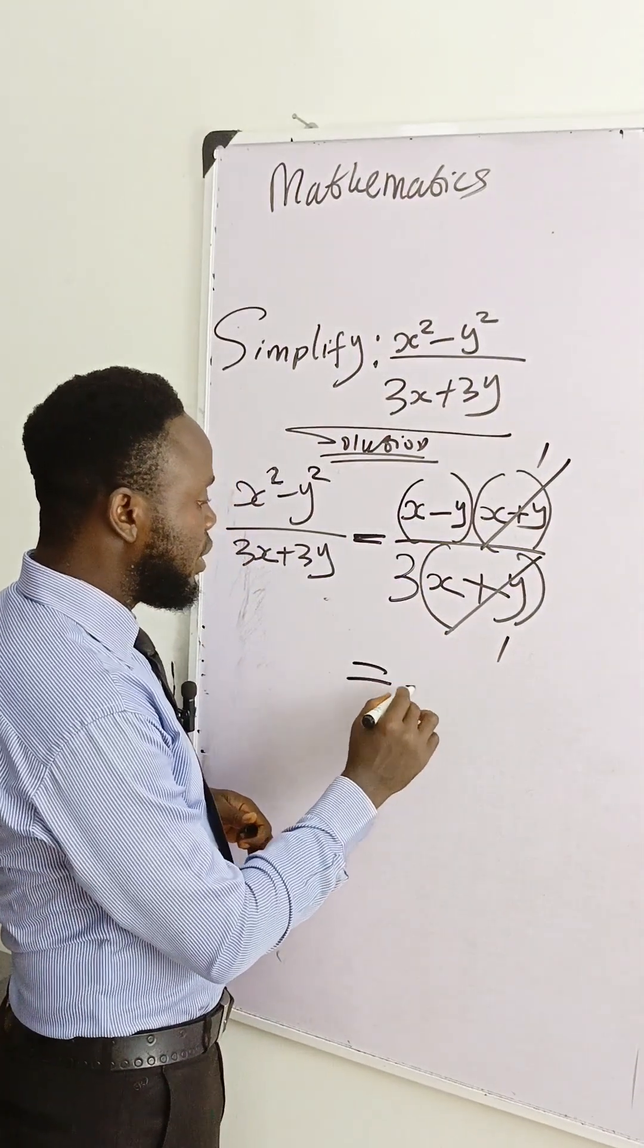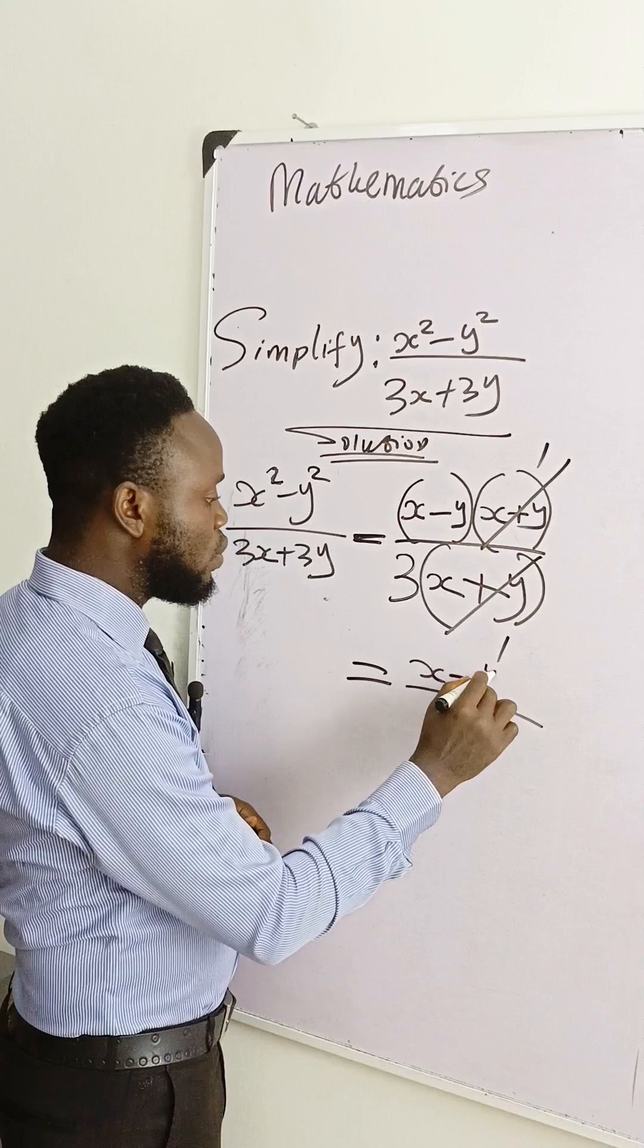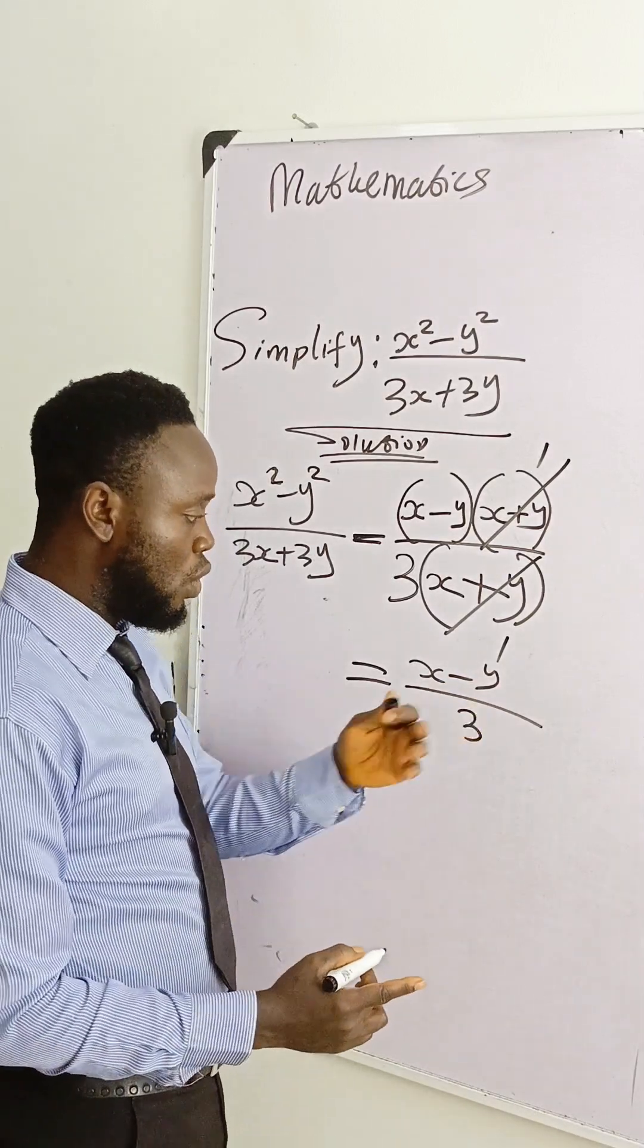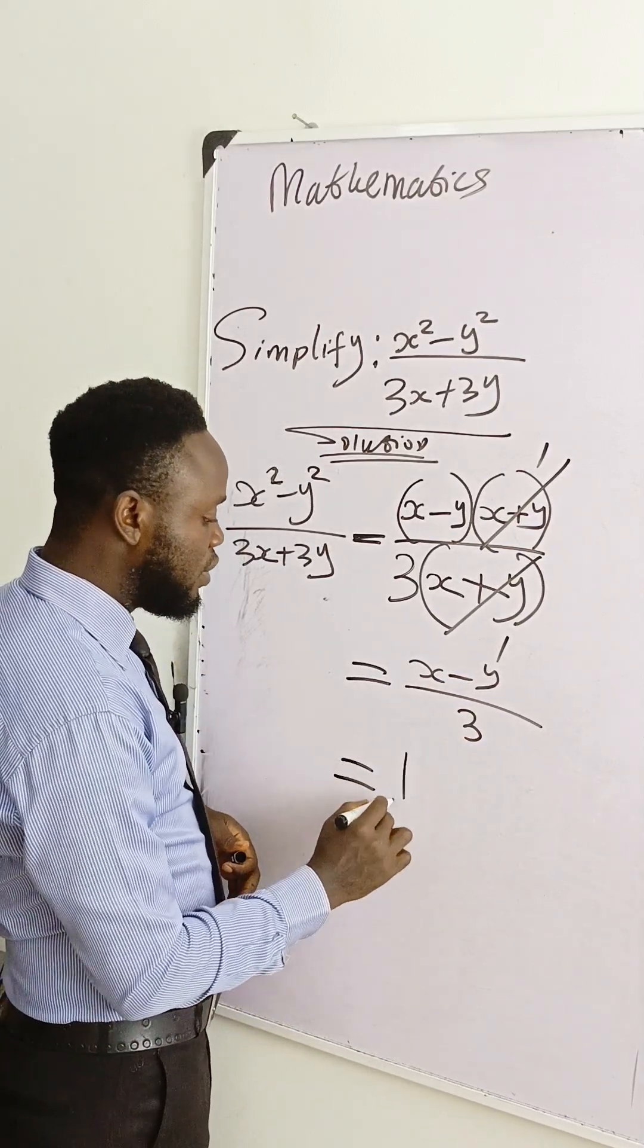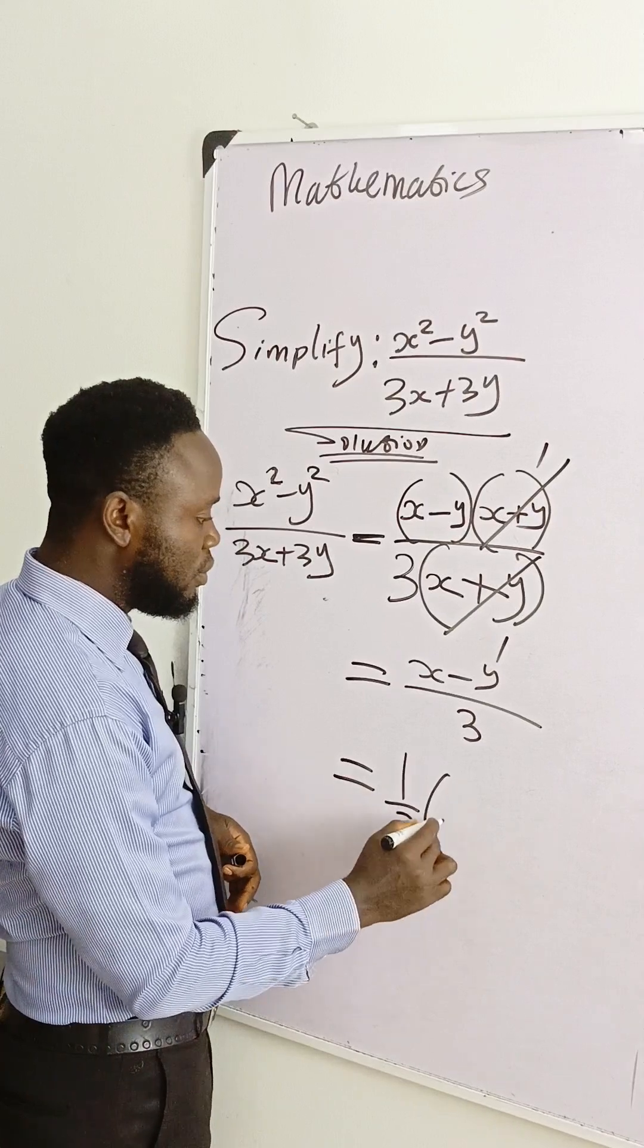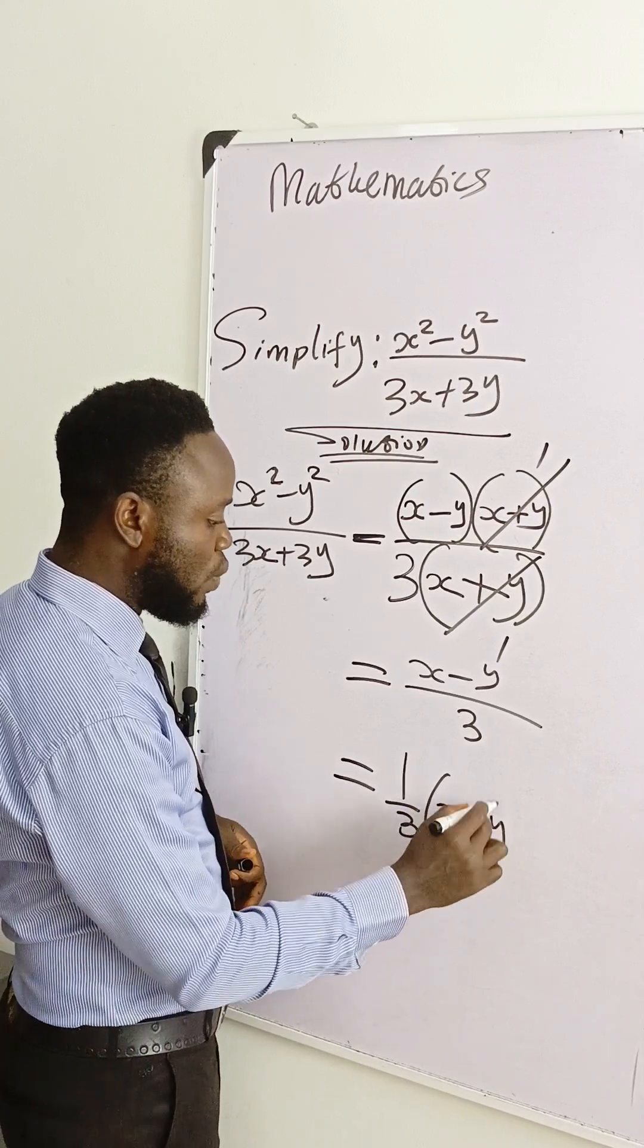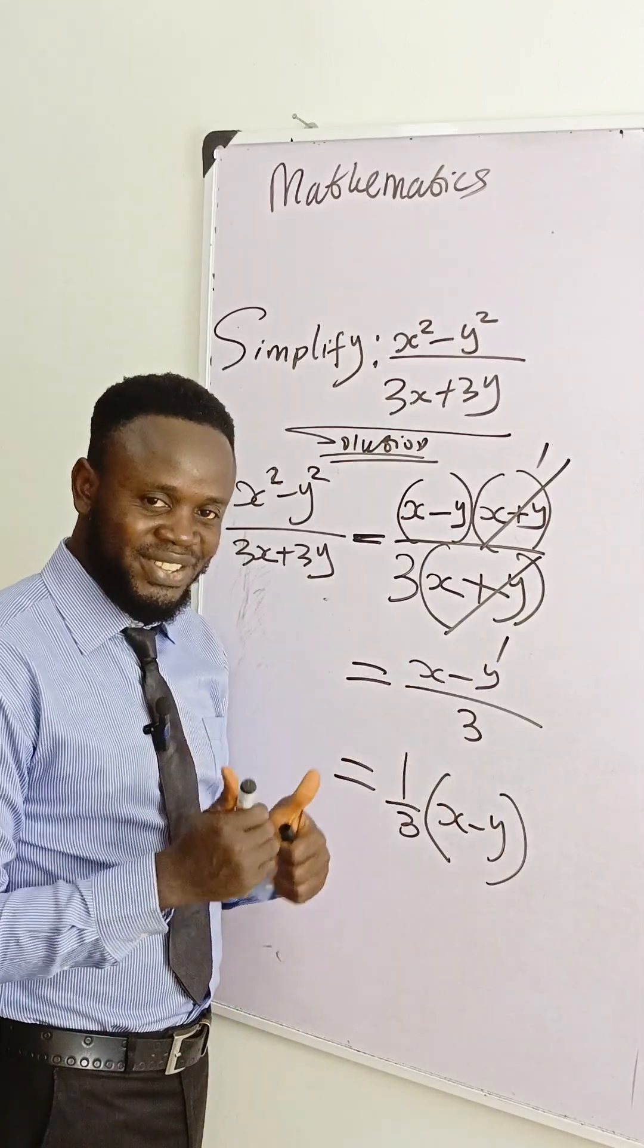And finally we are left with x minus y over 3 as our answer. Or you can write it also in this way, one over three times x minus y, whichever way is correct. Thank you.